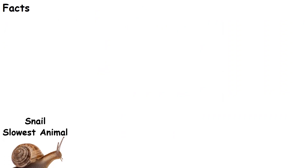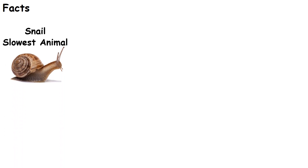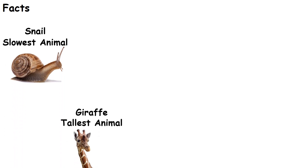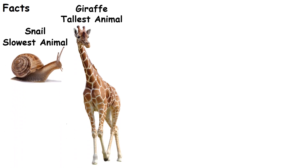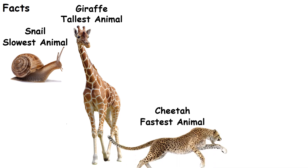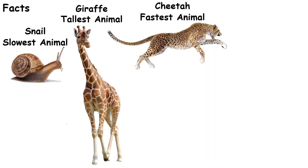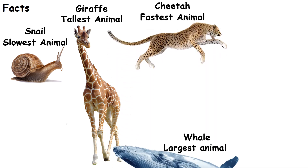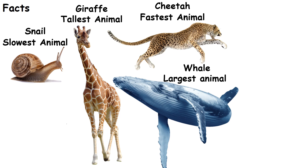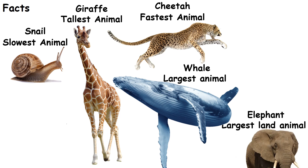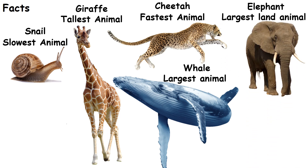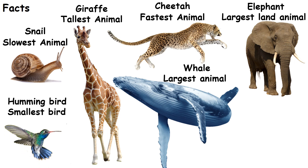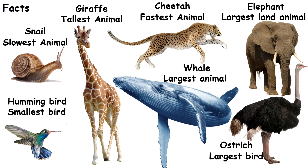Facts about animals: Snail is the slowest animal. Giraffe is the tallest animal. Cheetah is the fastest animal. Whale is the largest animal. Elephant is the largest land animal. Hummingbird is the smallest bird. Ostrich is the largest bird.